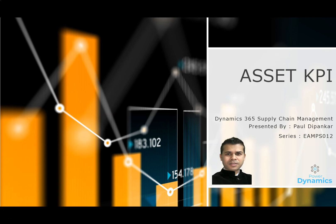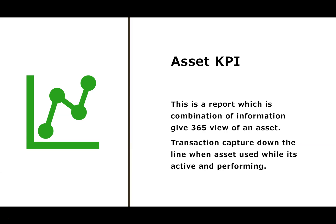Hello folks, in this video we will cover a very interesting topic of the asset management module called Asset KPI. Asset KPI is a report or inquiry form which gives a combination of information providing a 360-degree view of an asset — transactions captured against the assets, some activities, some performance — and it shows you the asset's KPI indicators. Let's see the demo.